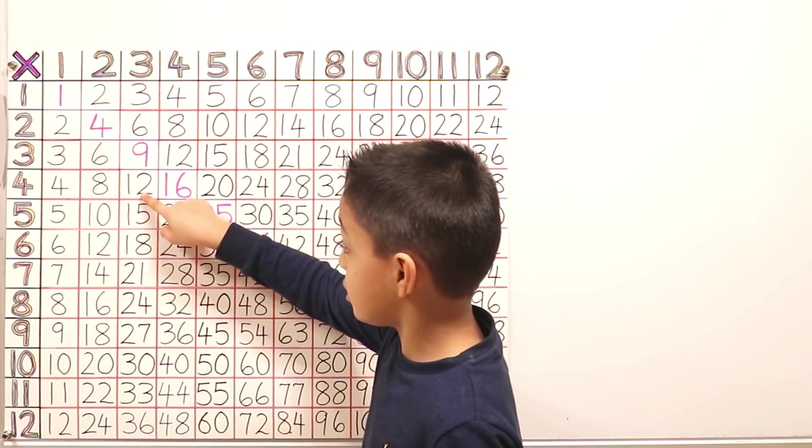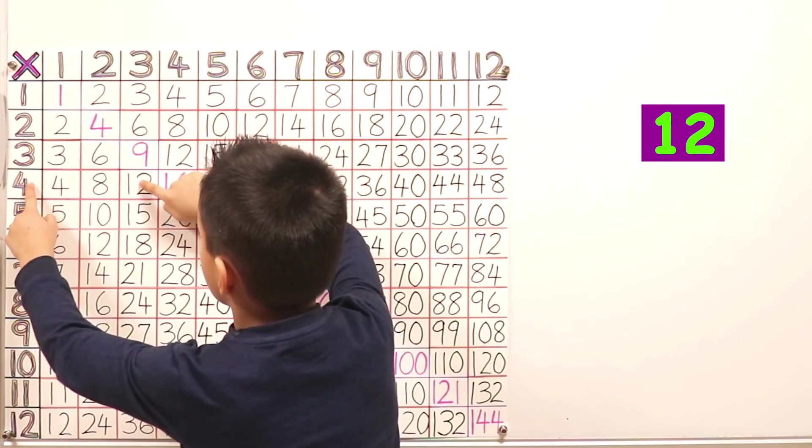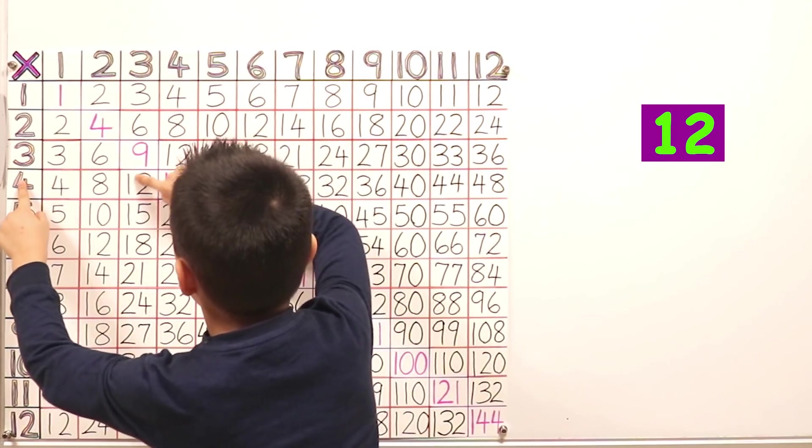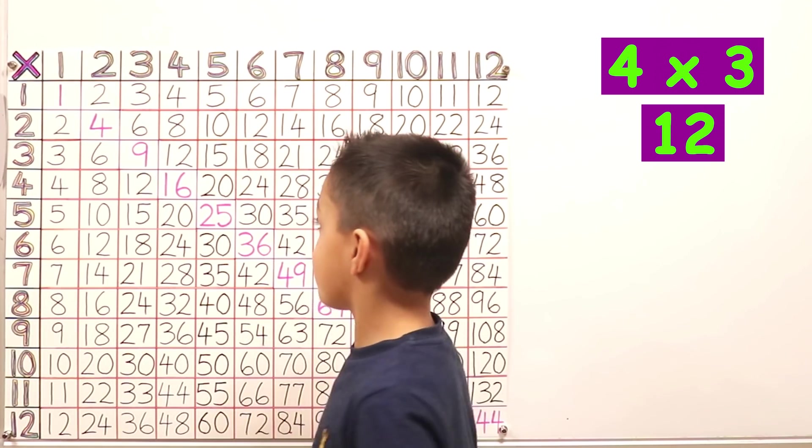And here is another twelve. Okay, and what two numbers multiply to give that twelve? So four and three. Four times three is twelve. Yes. That's very handy.